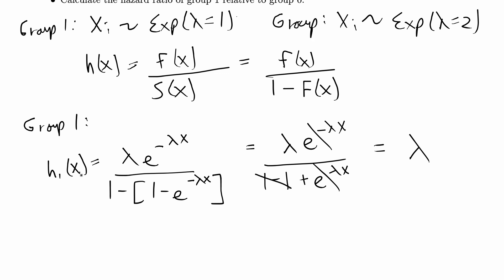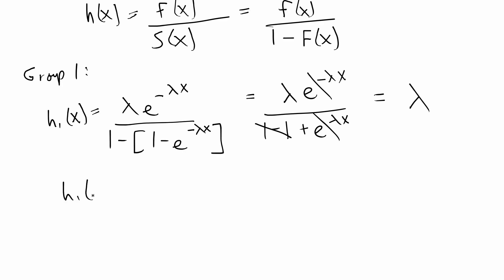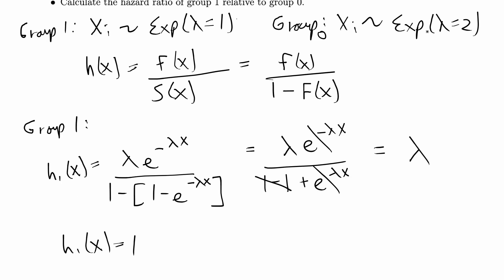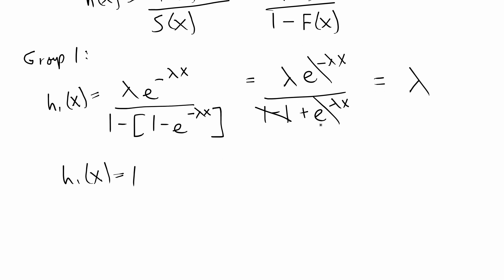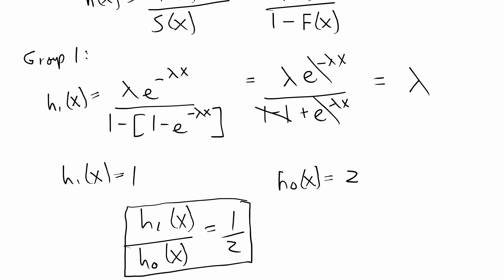For any exponential distribution, the hazard function is always just going to be equal to the parameter lambda. For group 1, lambda is equal to 1, so the hazard function is 1. For group 0, lambda is equal to 2, so the hazard function is 2. The hazard ratio is the hazard function for group 1 over the hazard function for group 0, giving a proportional hazards ratio of 1 over 2. That completes the first problem.